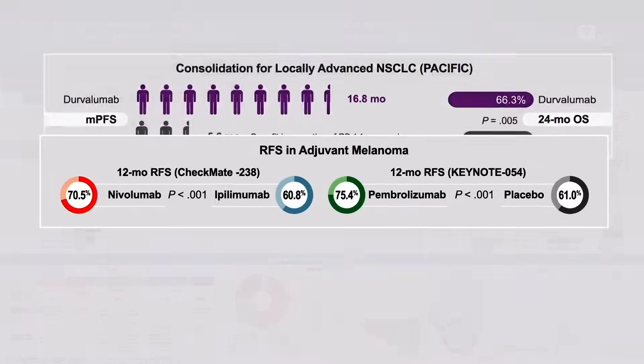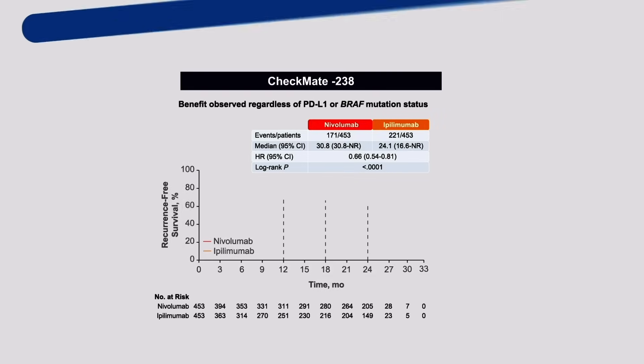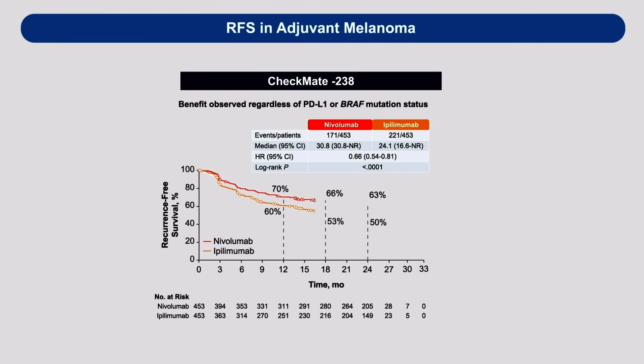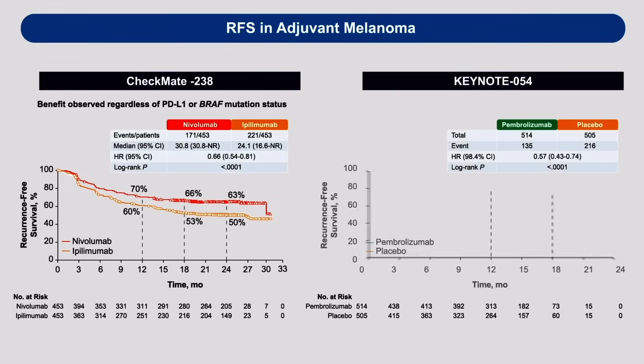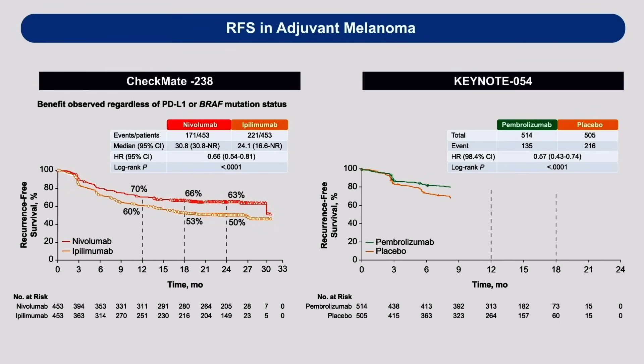Similar results were seen in melanoma. Checkmate 238 demonstrated a 10% improvement in relapse-free survival at two years with nivolumab in the adjuvant setting for locally advanced melanoma. Keynote 054 showed a 20% improvement in relapse-free survival with pembrolizumab in the adjuvant setting. These checkpoint inhibitors are not only active in the metastatic setting but are now showing activity in locally advanced and earlier disease stage settings.